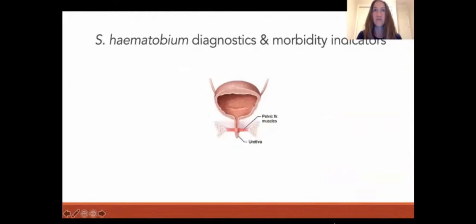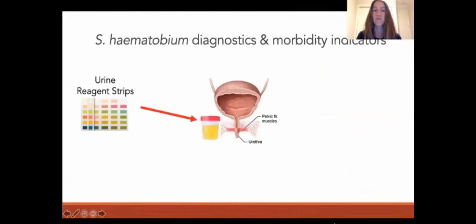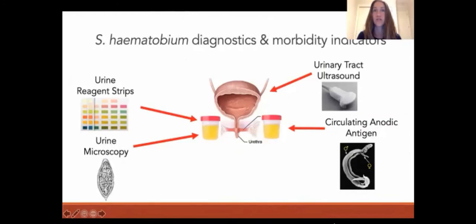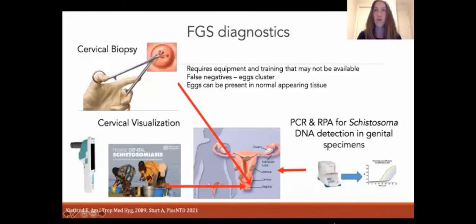The morbidity of genital schistosomiasis differs from the morbidity profiles assessed during standard monitoring and evaluation. Standard M&E often evaluates urinary schistosomiasis using urine dipsticks for hematuria and proteinuria, urine microscopy, circulating antigen, or abdominal ultrasound to assess urinary tract morbidity. Unfortunately, none of these modalities definitively evaluate for genital involvement. An FGS diagnosis requires evaluation of the female genital tract — either visualization or sampling — in addition to standard monitoring and evaluation performed for urinary schistosomiasis.